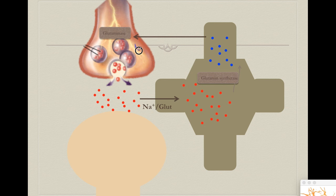Once glutamine is back in neuron A, it is degraded by an enzyme called glutaminase. Glutaminase separates the amino group — the NH3 — and we can reuse it by adhering it to other glucose groups, generating more glutamate. So the life cycle of this amino group is: it adheres to a glucose molecule, gets into the vesicle as glutamate, glutamate is released into the synaptic cleft, and activates neuron B.